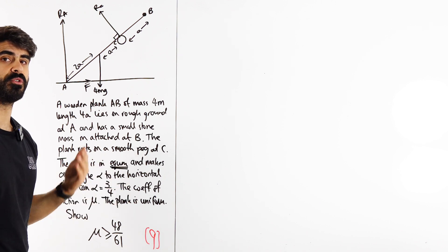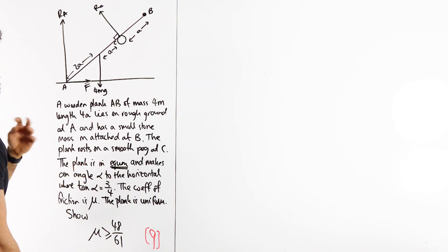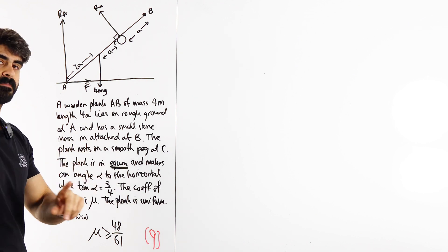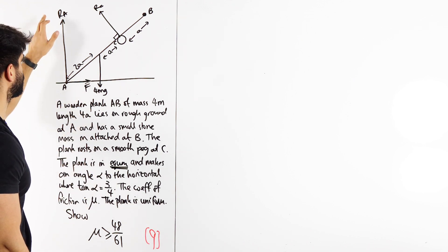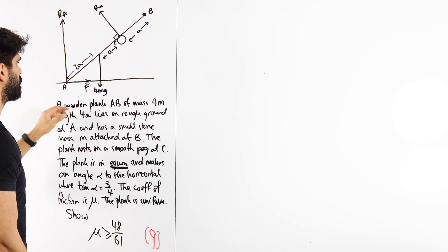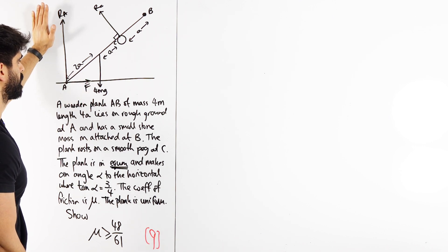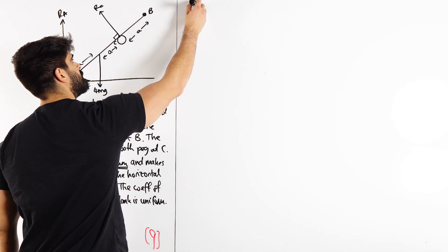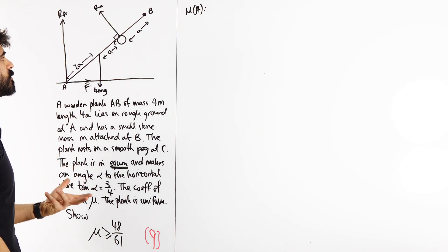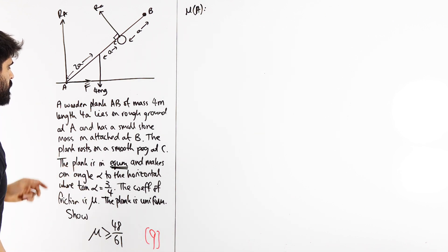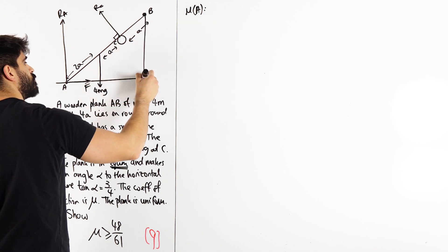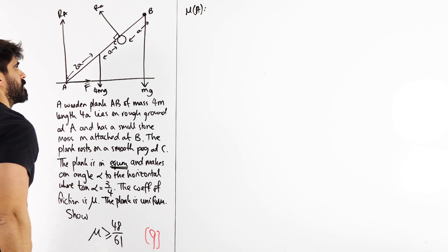Moments is an incredible thing guys, because it allows us to remove forces from our diagram. If we take moments from our A, we can ignore RA and F. Because remember, a moment is force times perpendicular distance. So if these two forces go through A, their perpendicular distance is zero. So we can just ignore them. So taking moments of our A, we can consider how the other forces are affecting our diagram. Now one thing I've just missed out is that we do have this mass at B. I'm going to draw a long line there. This mass is just M, so we're going to put MG.